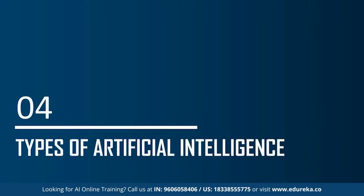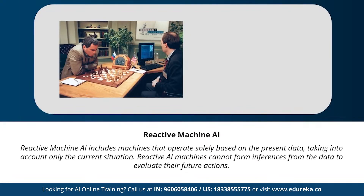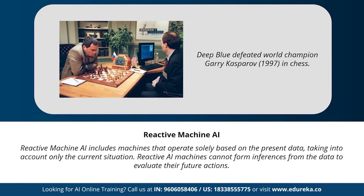Moving on to the different types of artificial intelligence: based on the functionality of AI-based systems, AI can be categorized into four types. The first type is reactive machines AI — machines that operate solely based on present data, considering only the current situation. An example is IBM's chess program that beat world champion Garry Kasparov.